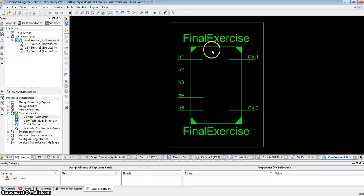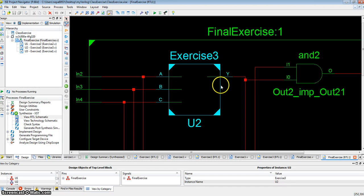Let's look at the RTL schematics. So my final exercise, that's the name of the module, has five inputs, in1, in2, in3, in4, in5, and two outputs, out1, out2. So let's double-click inside here.